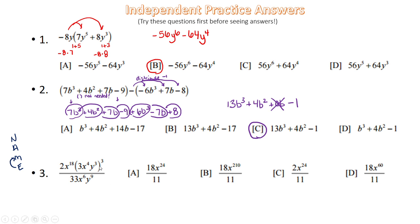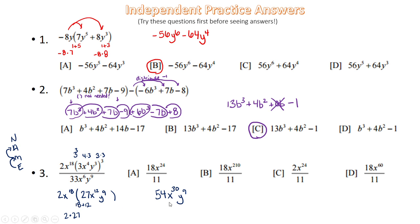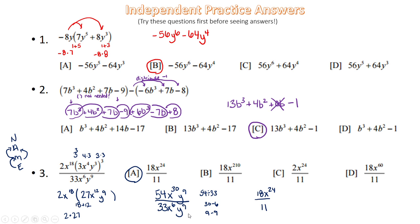Answer 3: start by multiplying the exponents with the exponent-to-exponent rule to get 27x to the 12th y to the 9th. Then multiply by the term in front: 2 times 27 is 54, add only the x's — giving x to the 30th — and y stays to the 9th. Dividing by 33x to the 6th y to the 9th: 54 over 33 simplifies to 8 over 11; 30 minus 6 gives x to the 24th; and 9 minus 9 equals 0, so the y's cancel. Answer is 8 over 11 x to the 24th.